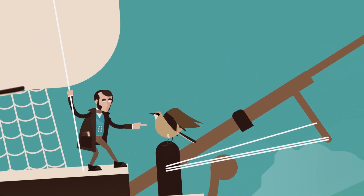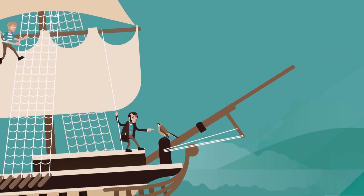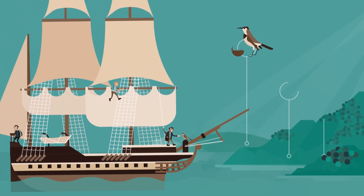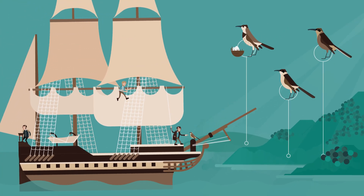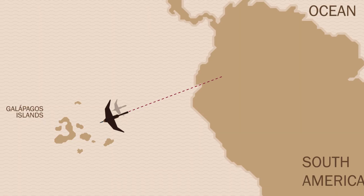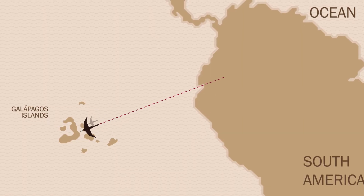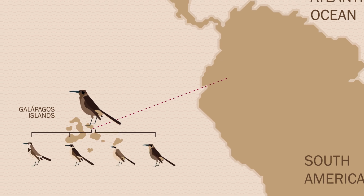He had also seen mockingbirds, and when he got to the Galapagos, he found different mockingbird species on the islands, distinct among each other and from the mainland species. Because of their sheer similarity and closeness, Darwin hypothesized that they had a common ancestor, whose specimens had flown to the islands and changed there.